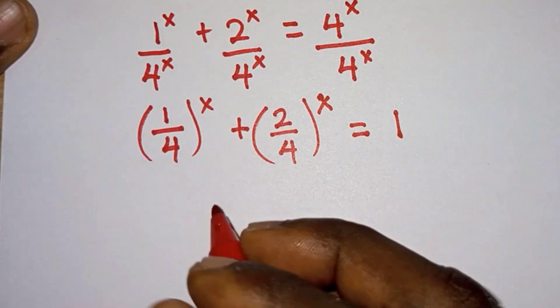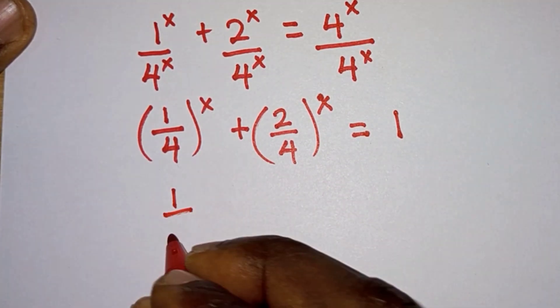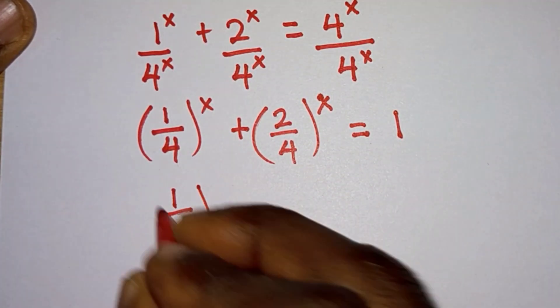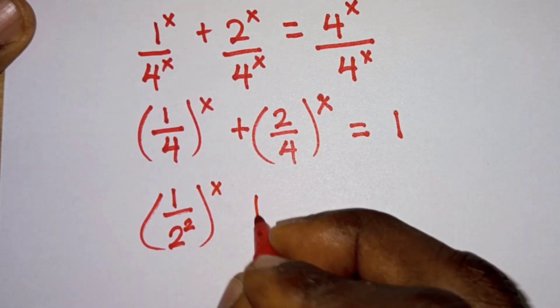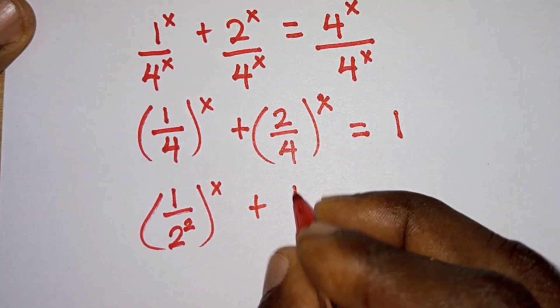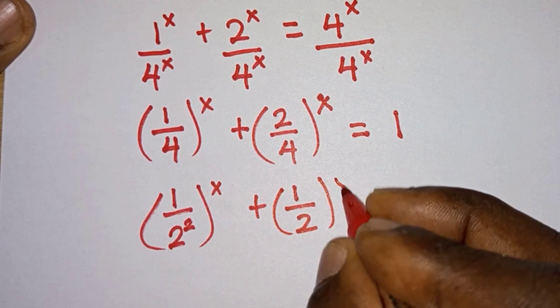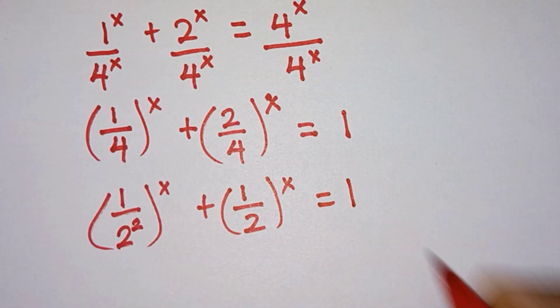And we can simplify this as (1/2^2)^x plus (1/2)^x, and the right hand side is 1.